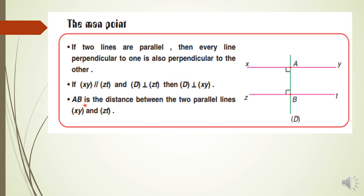AB is the distance between the two parallel lines (xy) and (zt). This is the distance between the two parallel lines.